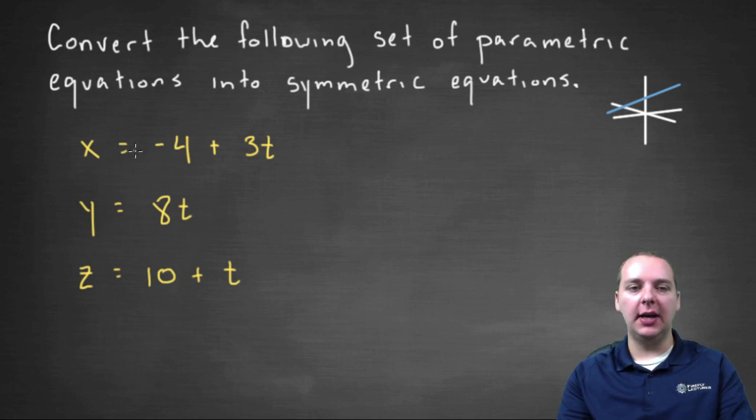So in the first equation x equals negative four plus three t, we could write this as t equals x plus four, add four to the left, and then divide by three.